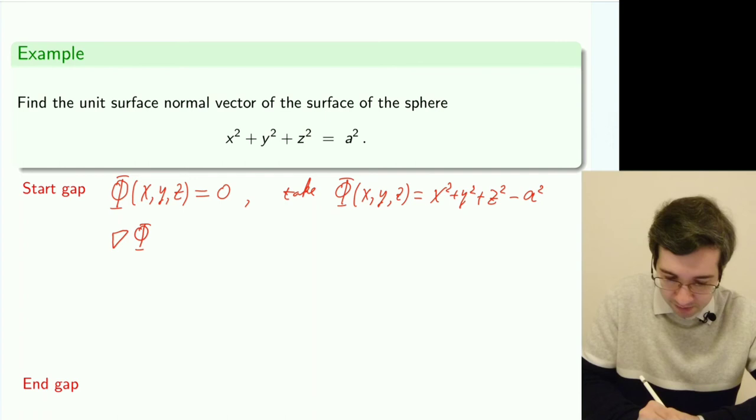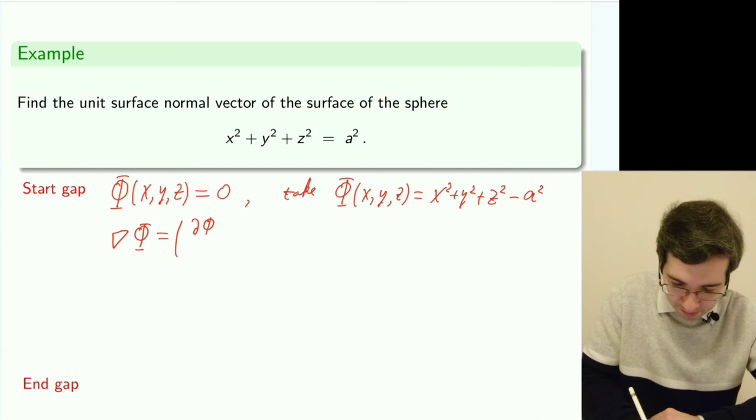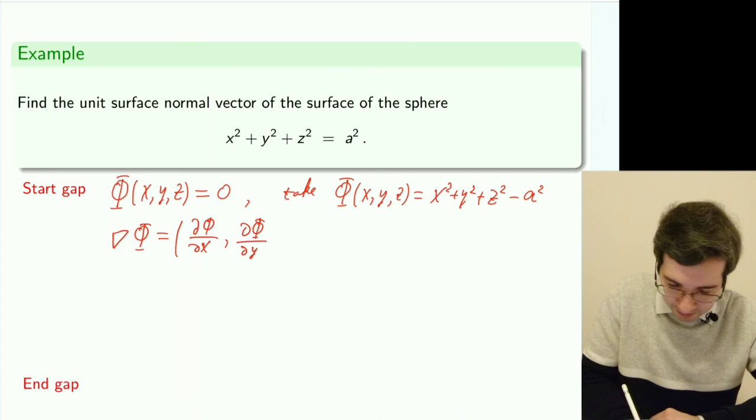Here we can take that implicit form to be equal to x² + y² + z² - a², which will satisfy our definition of the implicit form of the surface. Then we will compute the gradient. By definition, take the x component, y and z component of our gradient, which will be 2x, 2y, and 2z.